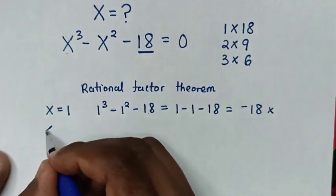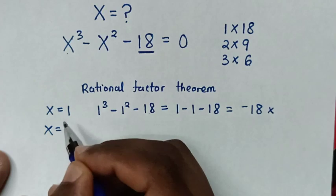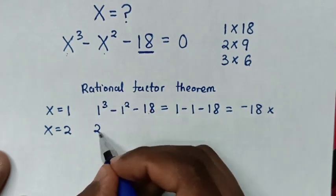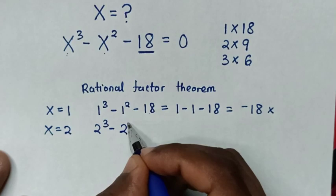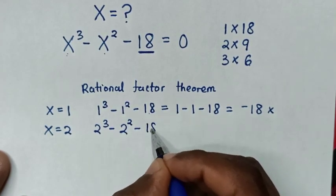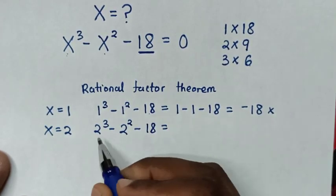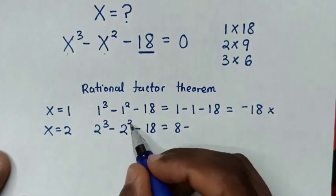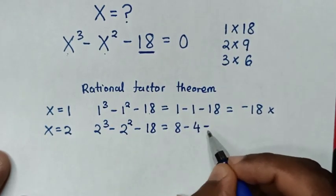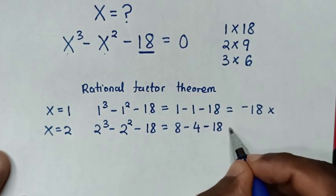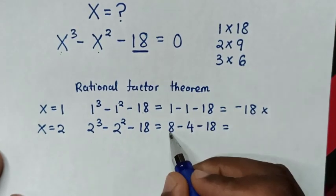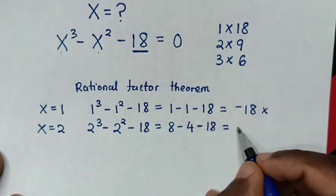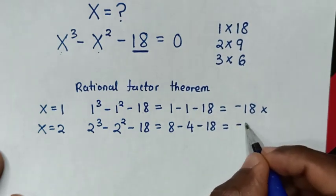Then in the next step we test for x is equal to 2. We substitute 2: 2³ minus 2² minus 18. So 2³ is 8, minus 2² is 4, gives 8 minus 4 is 4, then 4 minus 18 is negative 14. So x equals 2 does not work either.